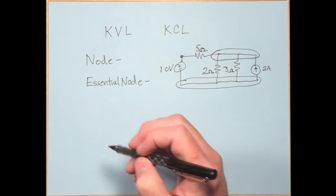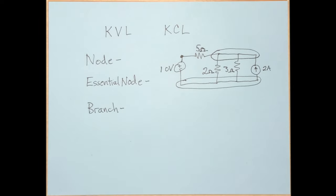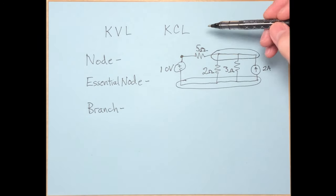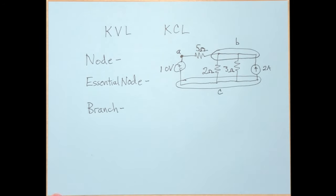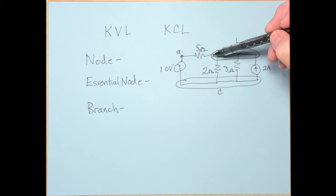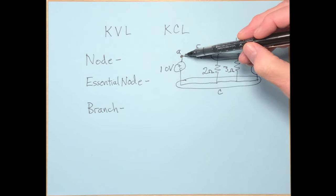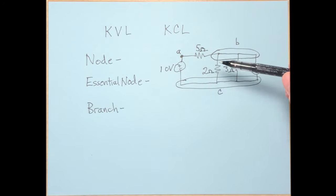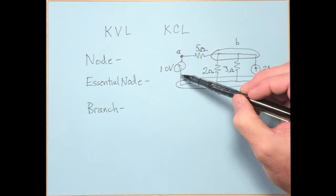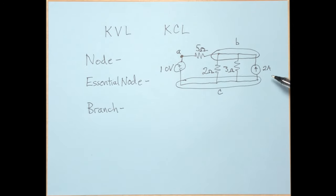Next, let's talk about a branch. A branch is a path through a circuit — any path that connects nodes. Let's label the nodes A, B, and C. Going from node A to node B through the 5-ohm resistor represents a branch. From A down to C is another branch. From B to C there are multiple branches. So there are five different branches in this circuit.